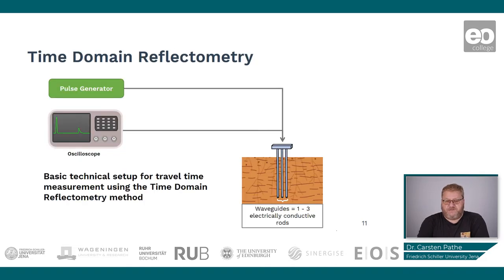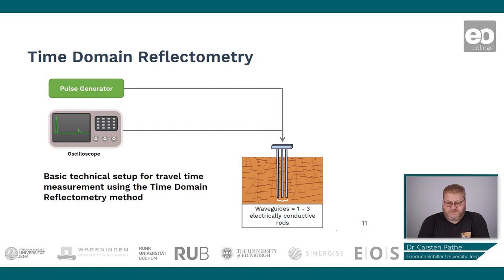So what are the waveguides? Here we have a small overview of a setup for doing time domain reflectometry measurements. It consists mainly of a pulse generator, an oscilloscope, and in the soil we have three so-called probes or waveguides, which are metal sticks and conducting materials.